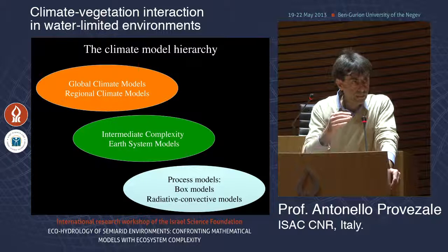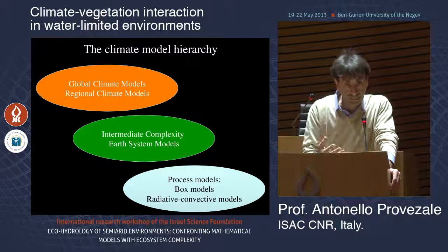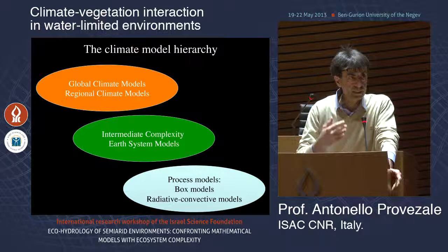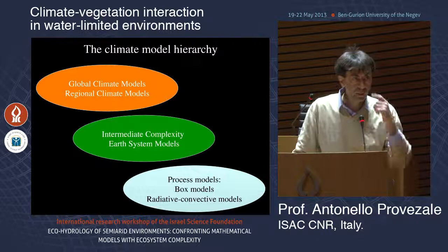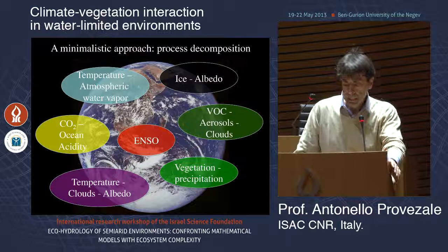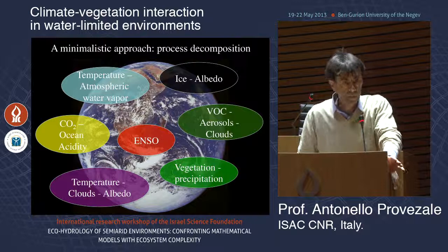We will focus on the lower level — the most simple — which is process models. These have a long history. They are just metaphors; there's no way they can really reproduce observations, but they can try to provide some way to understand what's going on. In particular, looking at process models and feedbacks, we focus on the vegetation-precipitation feedback: the interaction between vegetation, soil, and the hydrological cycle.